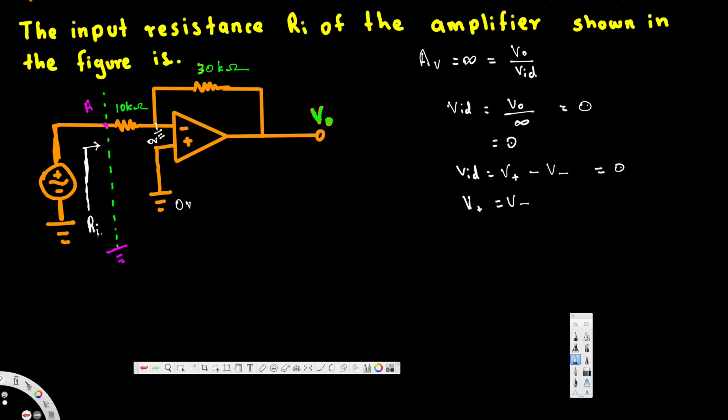We've seen that Ri, the effective resistance, is the effective resistance in between node A and ground. Since according to the ideal op-amp characteristics this is also ground, this is also zero voltage. The effective resistance between node A and the ground is 10 kΩ. That's going to be the final answer. So finally we can say Ri = 10 kΩ.